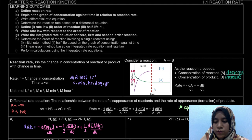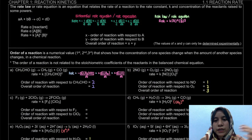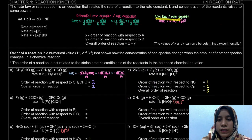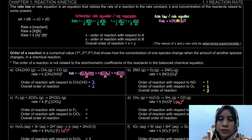So on your notes, you'll be on page 4. Just to remind you again, how to determine the order of reaction. Order of reaction is actually based upon our rate law. Rate law must be: rate is equal to k, and then the concentration of our reactant raised to some power. That power is actually our order of reaction.